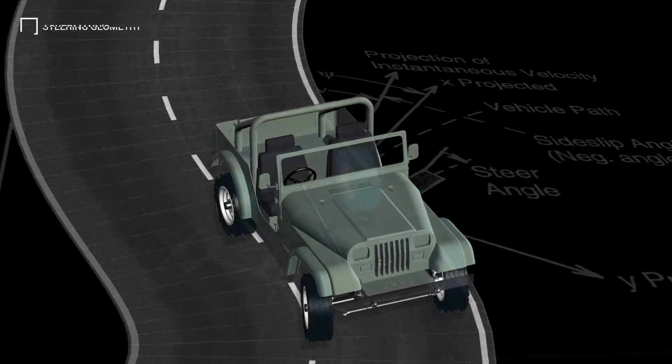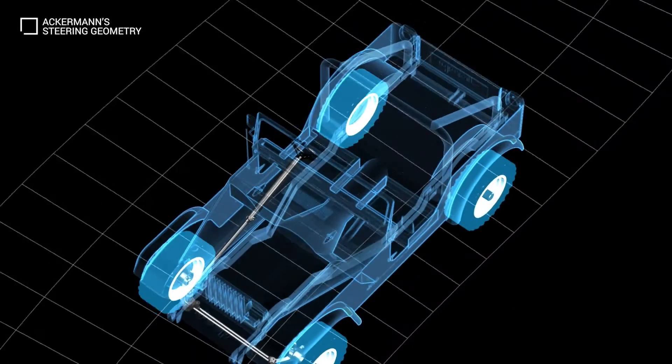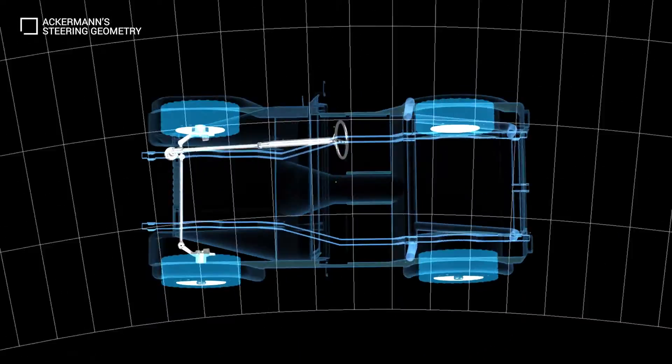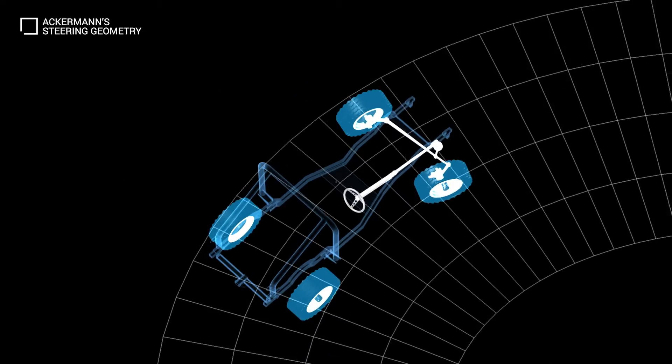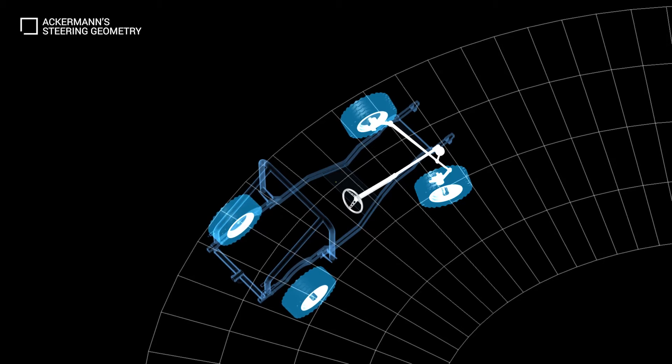The steering linkage connecting the steering box and wheels usually conforms to a variation of Ackermann steering geometry. This is required to avoid tire slip when turning a corner.